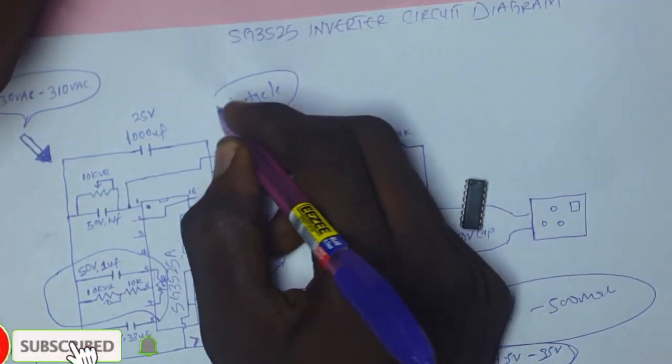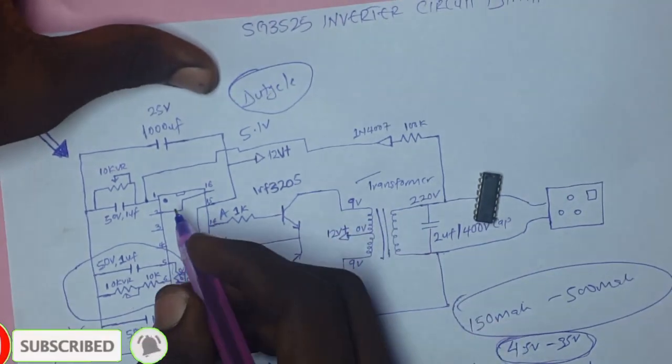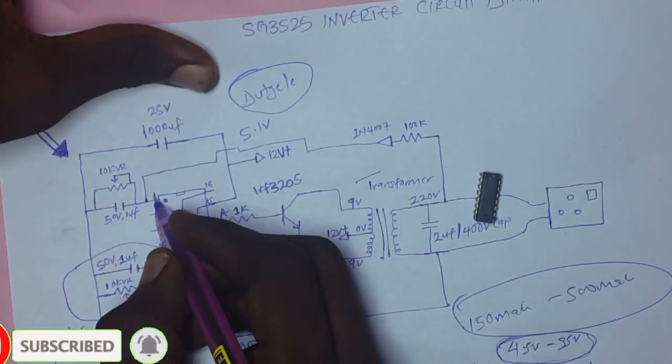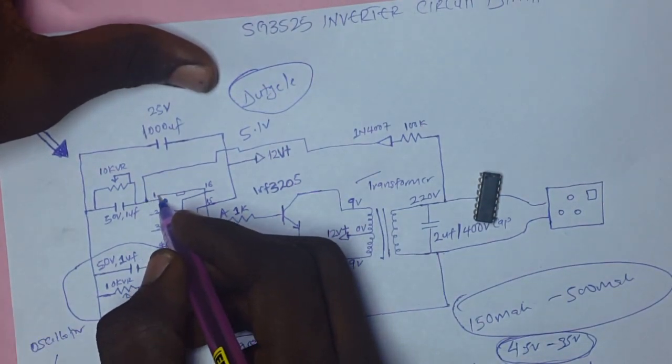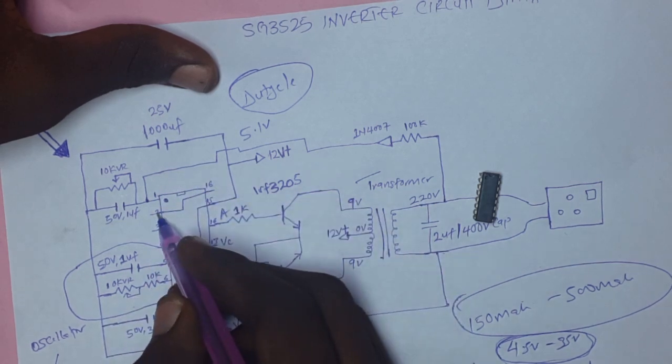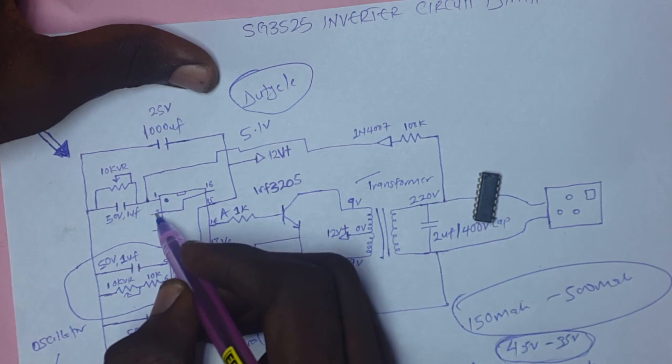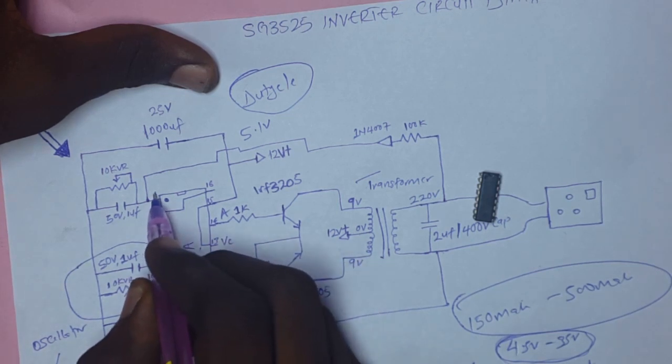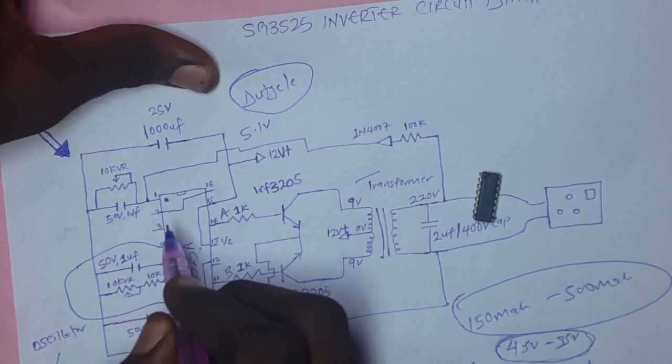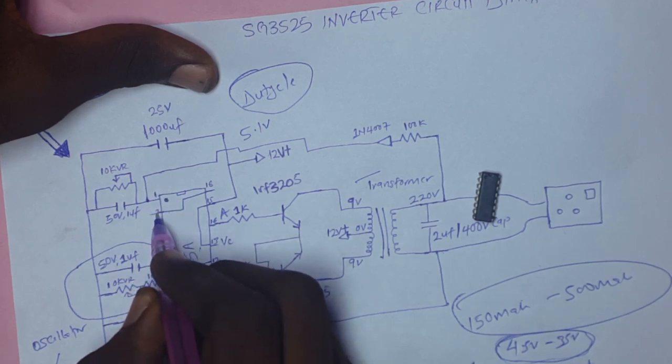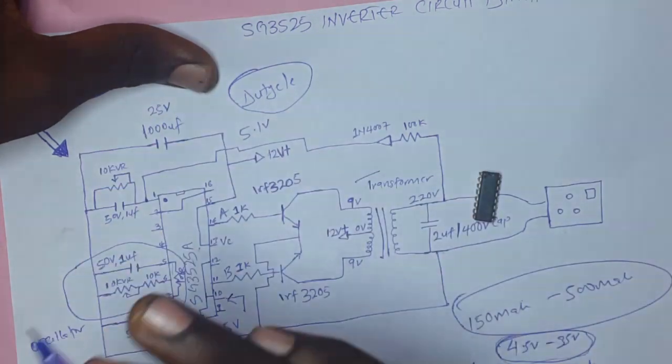Now, before going into the duty cycle, as I said, pin 1 is the inverted input, pin 2 is the non-inverting input. If the voltage in the inverted input is greater than the voltage in the non-inverting input, the duty cycle decreases.